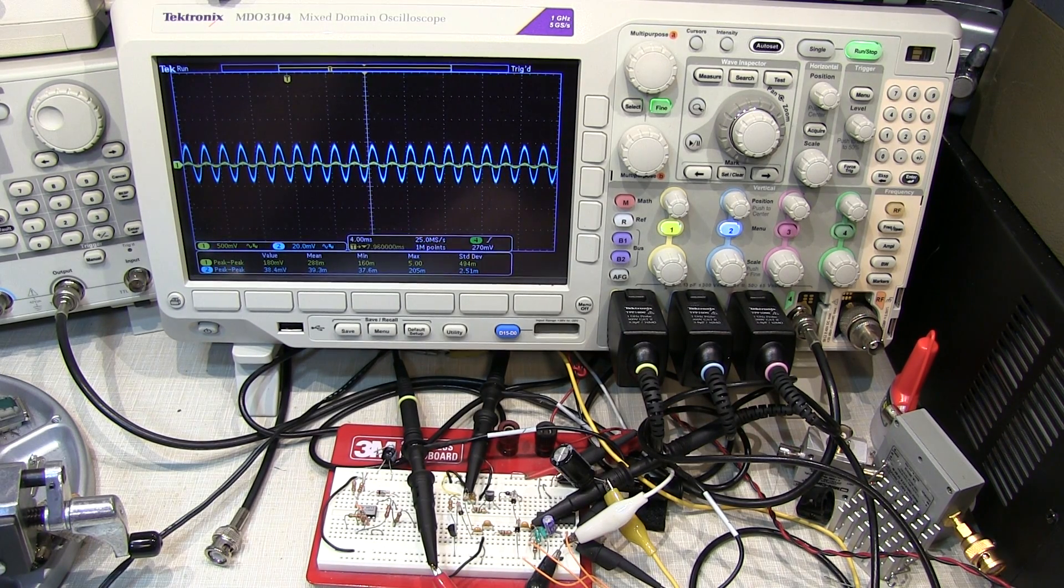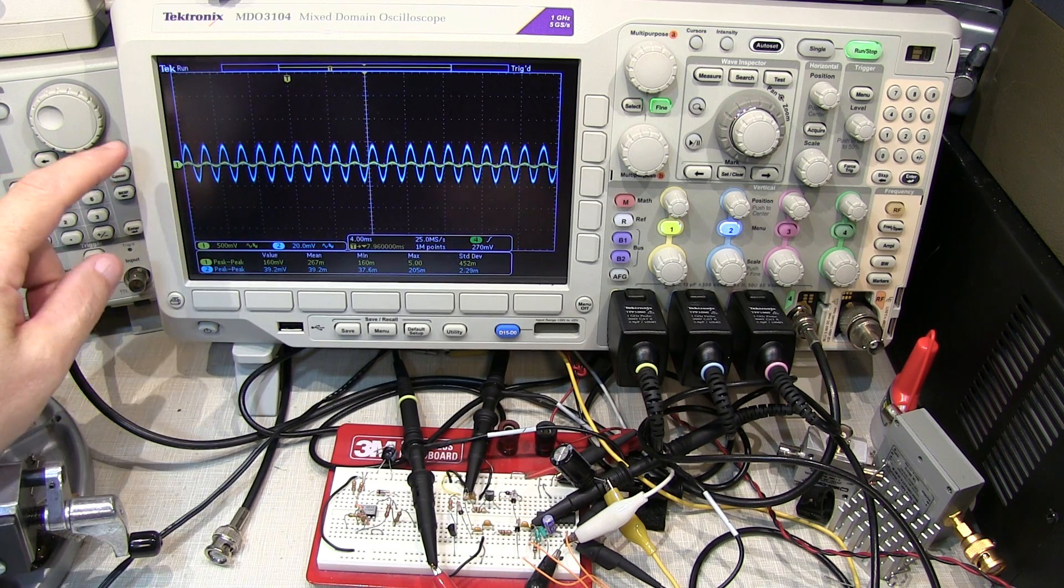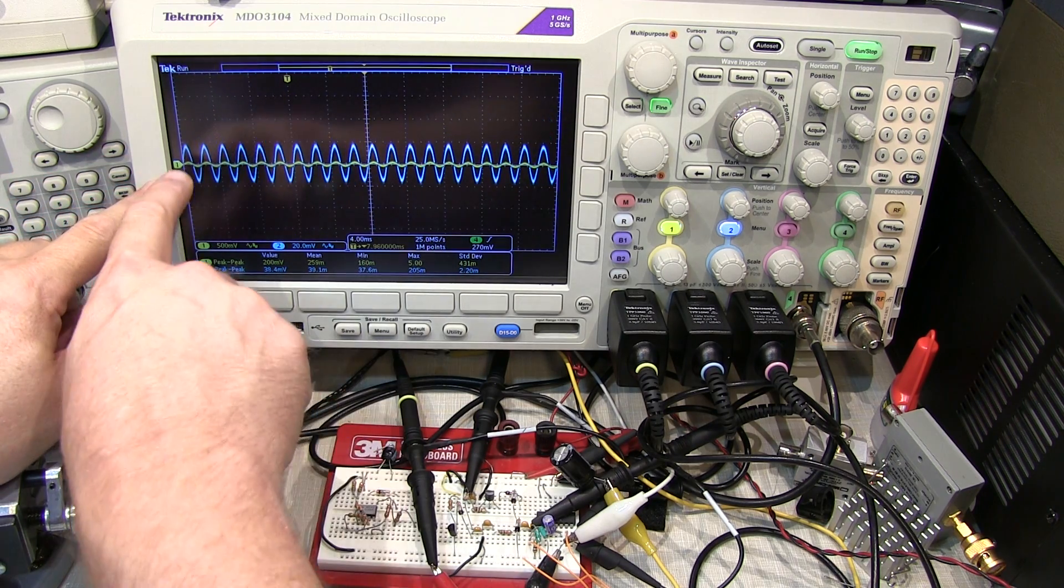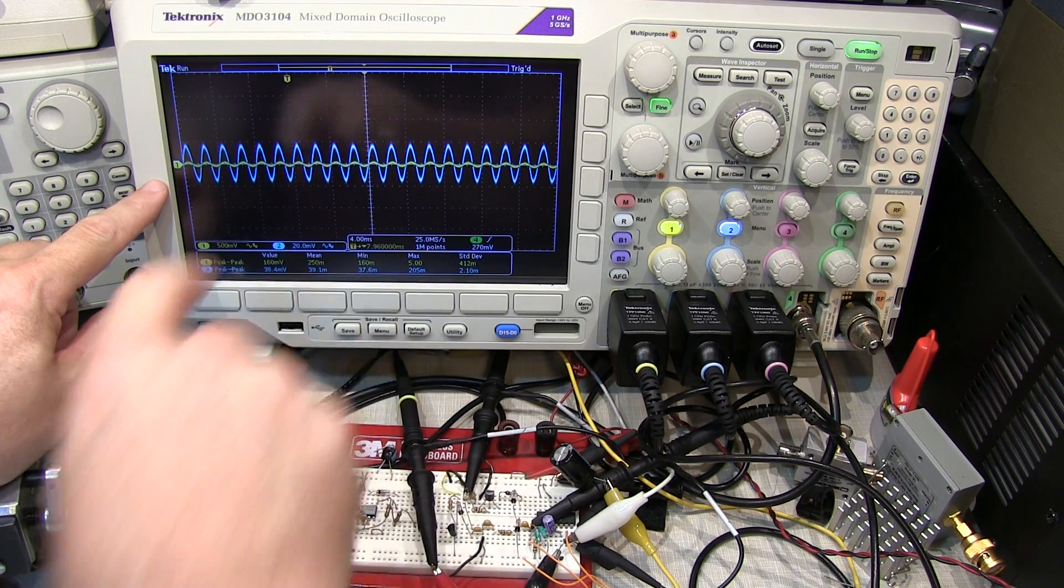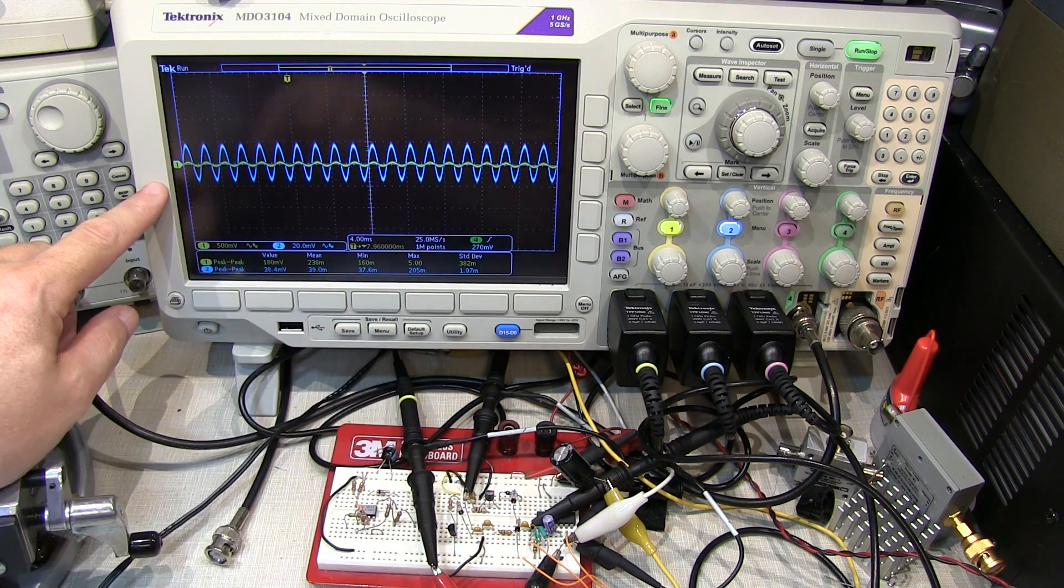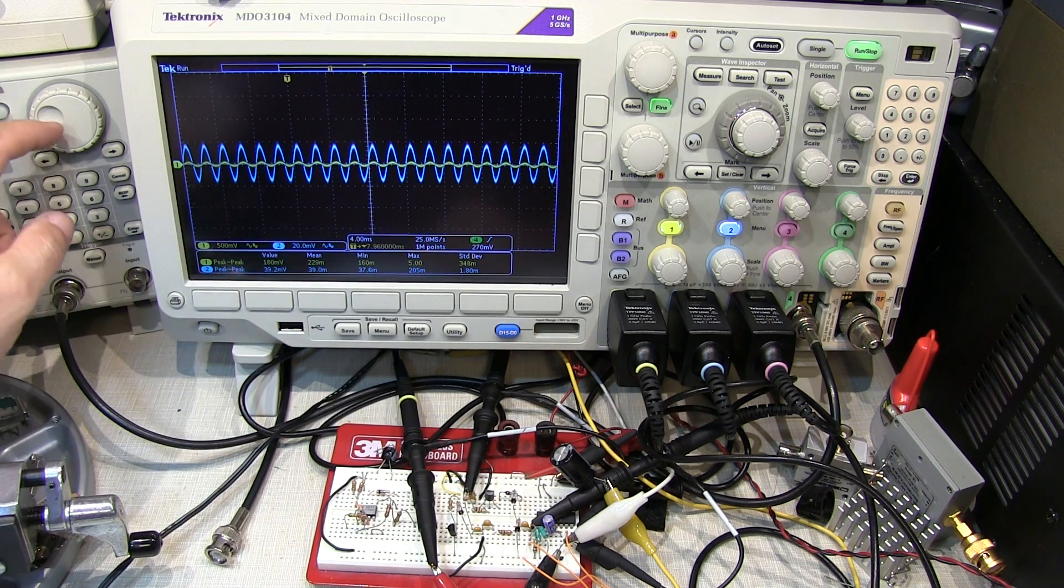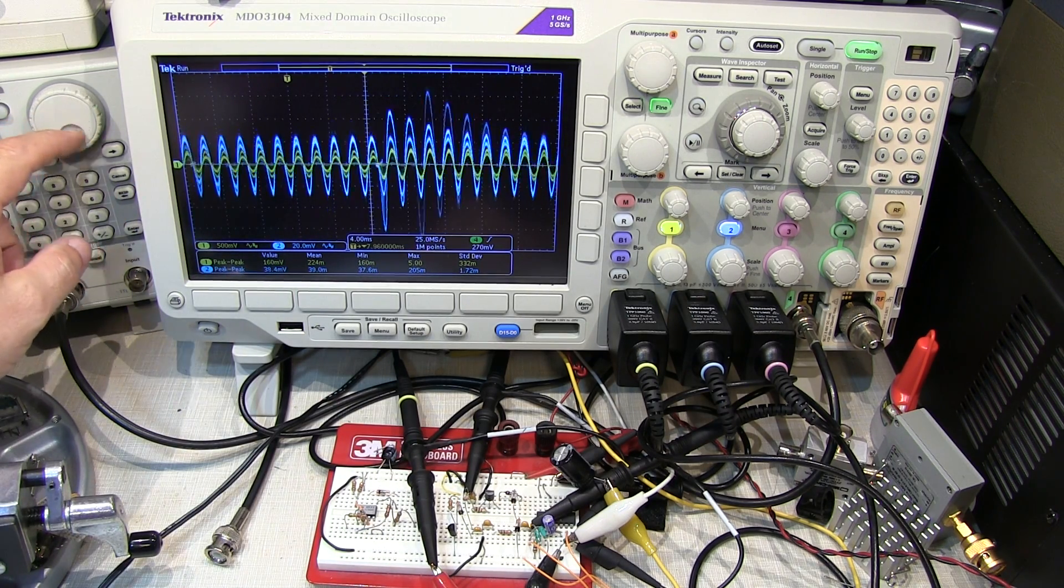A little circuit fun today with an automatic audio volume leveling circuit. Let's take a quick look at its operation. The output signal is shown in light blue on channel 2 and the input is here on channel 1. We can see that's about 180 millivolts peak-to-peak at the input.